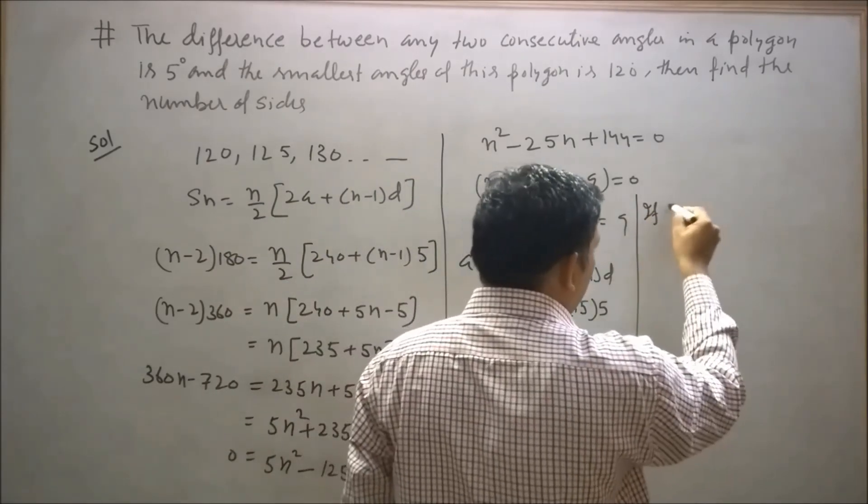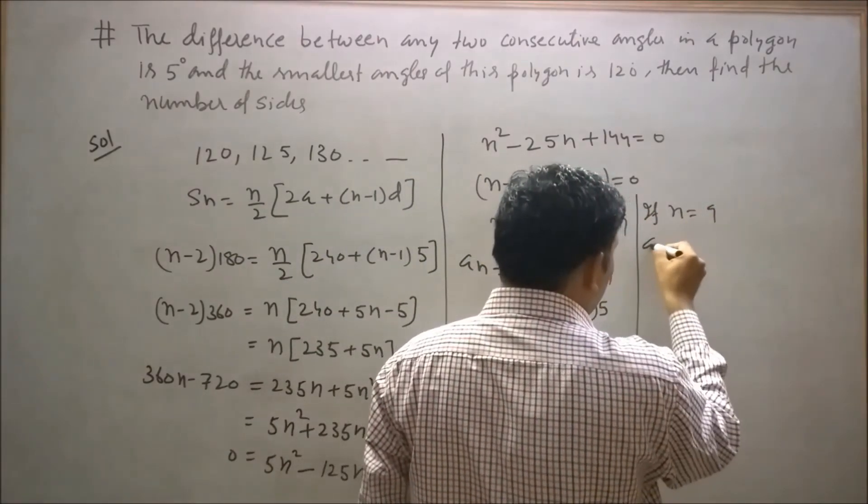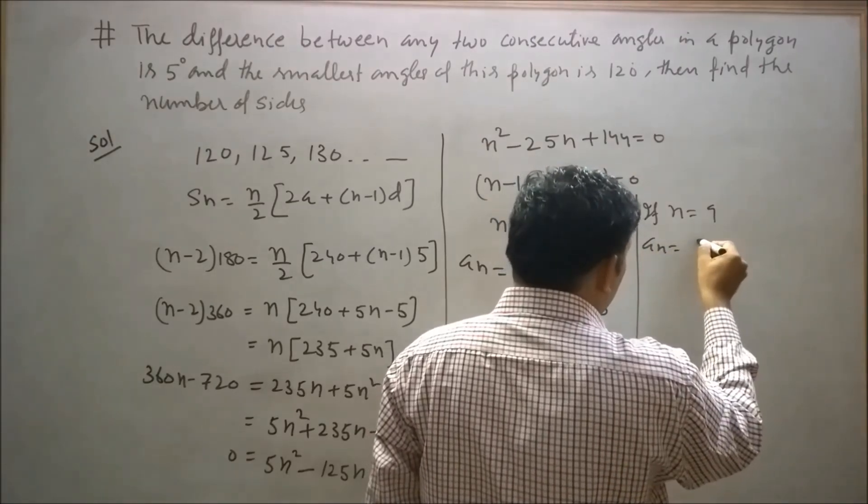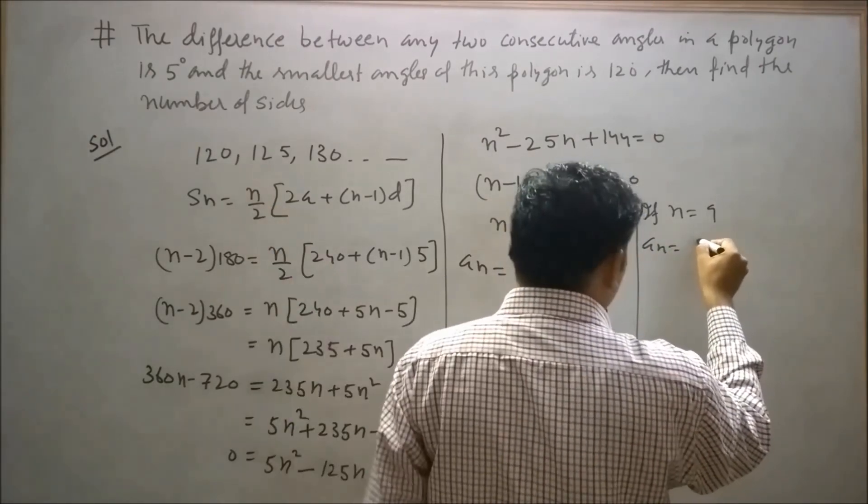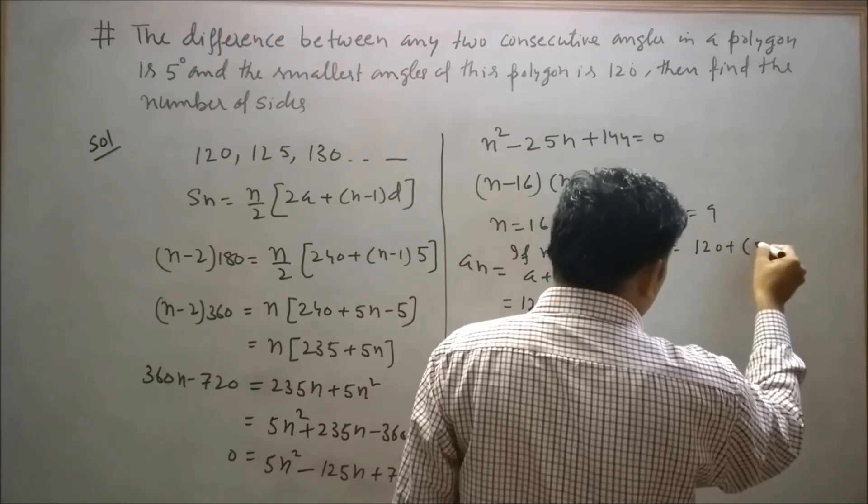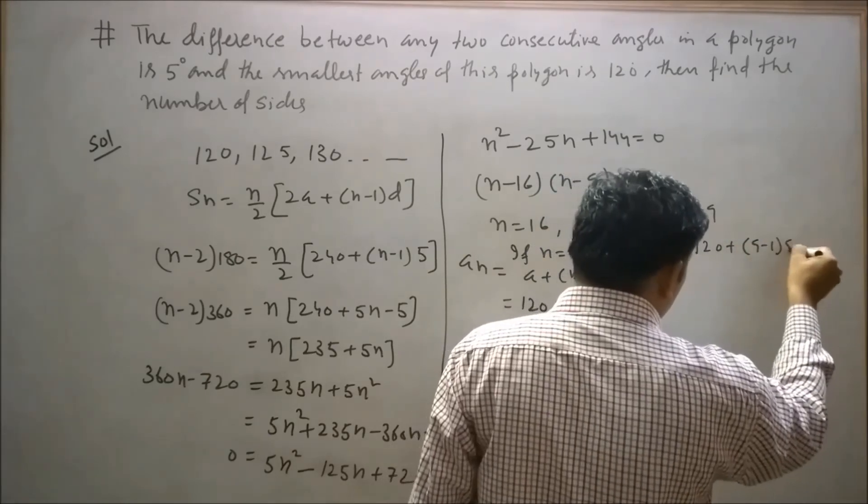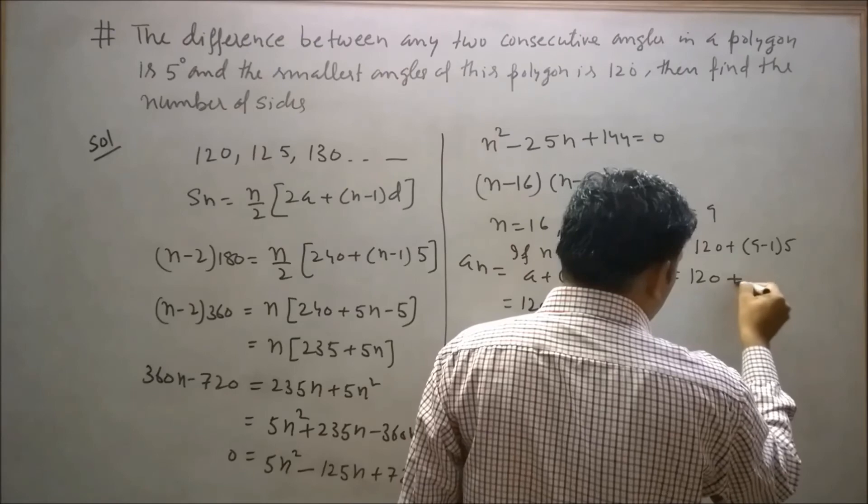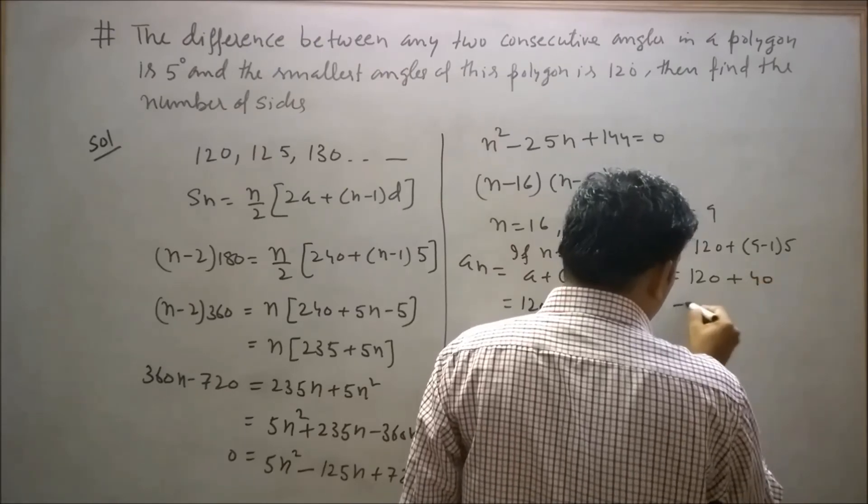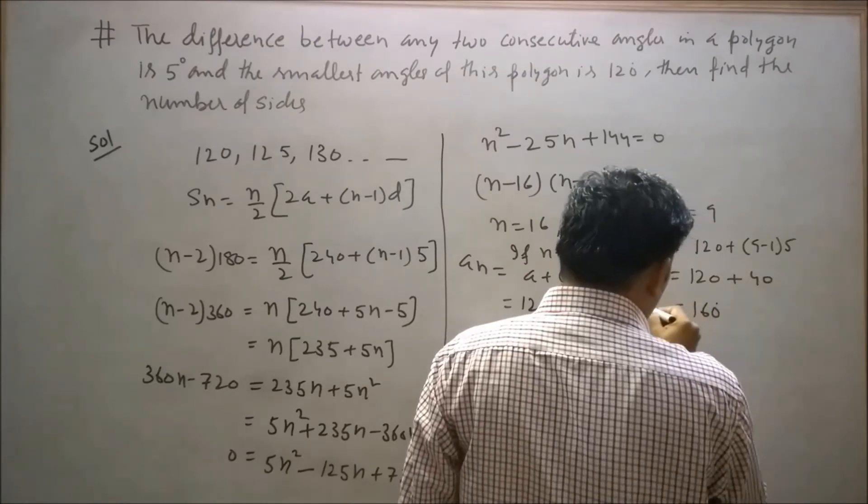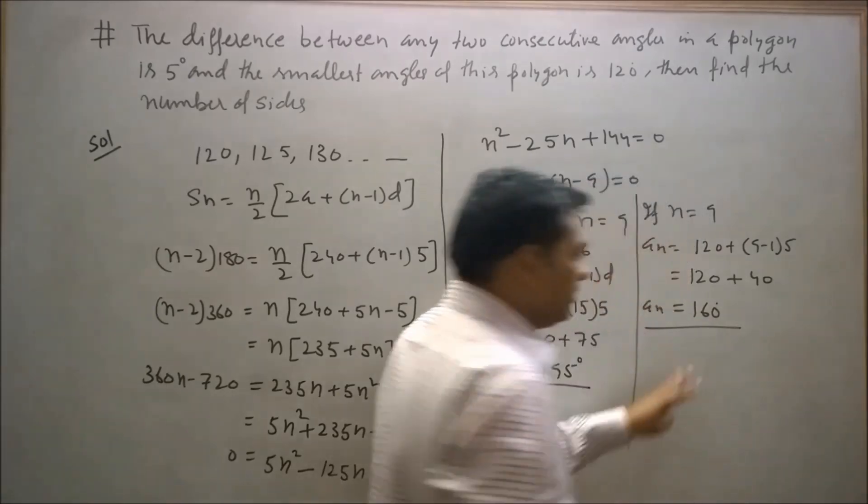If n = 9, then aₙ = 120 + (9-1) × 5 = 120 + 40. Then the nth angle will be 160 degrees.